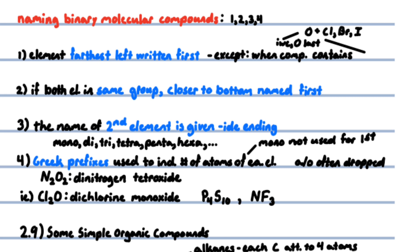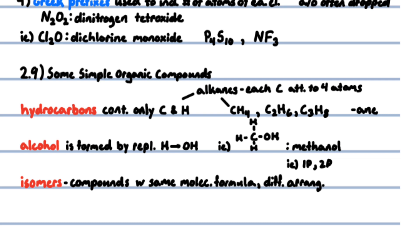Four, Greek prefixes indicate the number of atoms of each element. The prefix mono- is never used for the first element: mono- for one, di- for two, tri- for three, tetra- for four, penta- for five, hexa- for six, hepta- for seven, octa- for eight, nona- for nine, deca- for ten. For example, two chlorine atoms combined with one oxygen atom is dichlorine monoxide, and N2O4 is dinitrogen tetroxide.